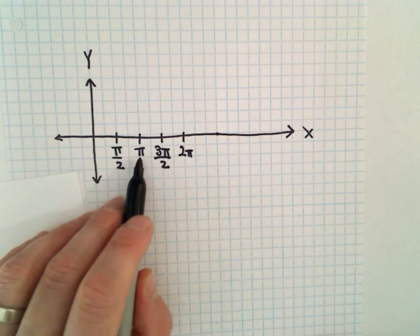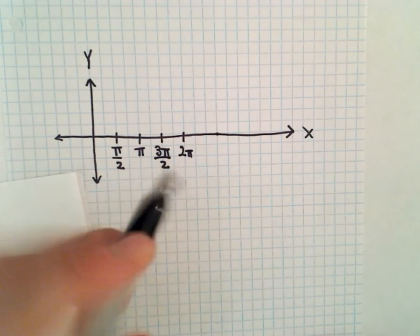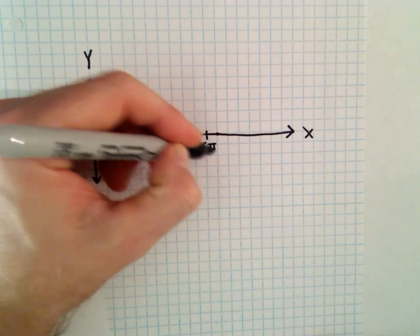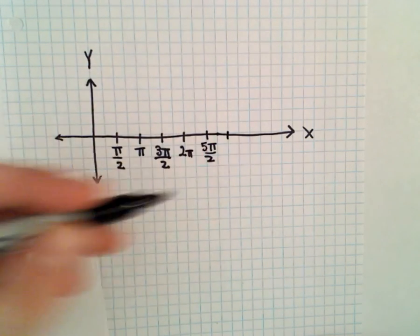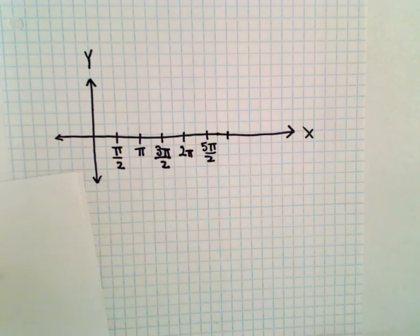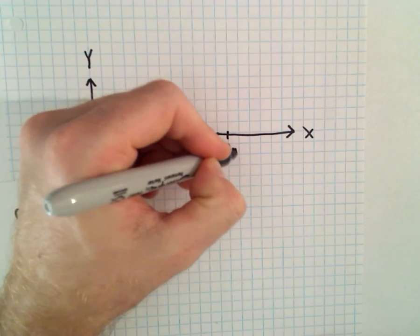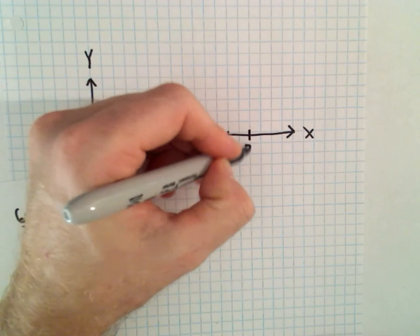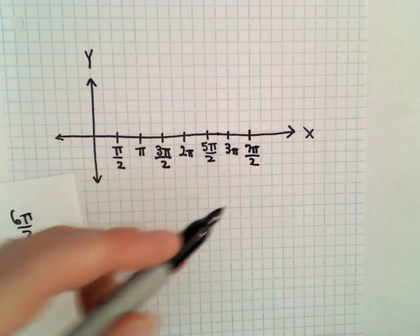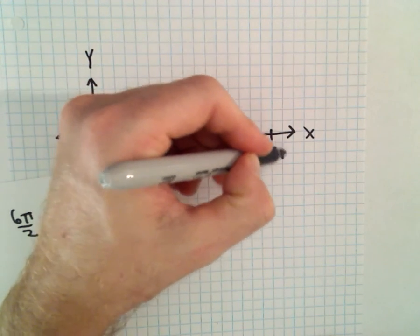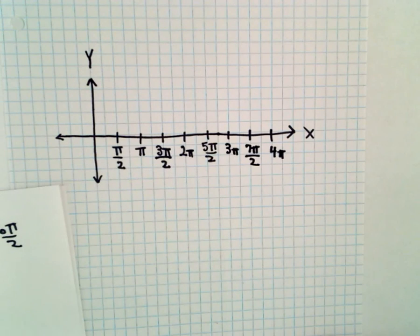One pi over two, two pi over two, three pi over two, four pi over two, we'll have five pi over two, six pi over two. Six pi over two is just going to be equal to three pi, then we would have seven pi over two, and then we would have eight pi over two, which would be equal to four pi. That'll give us two complete periods.